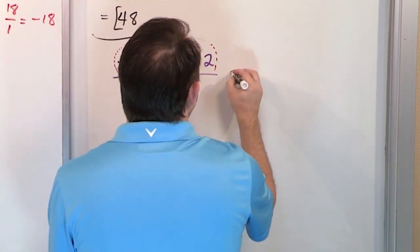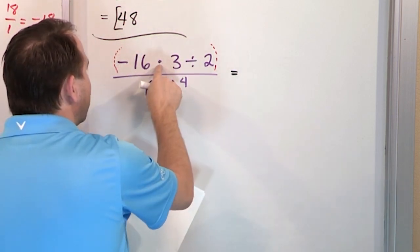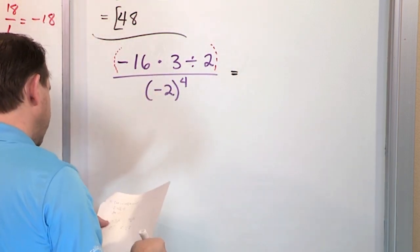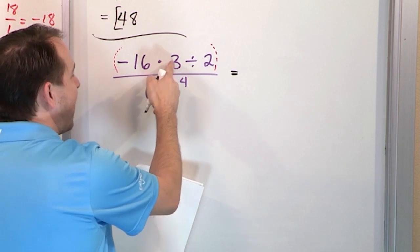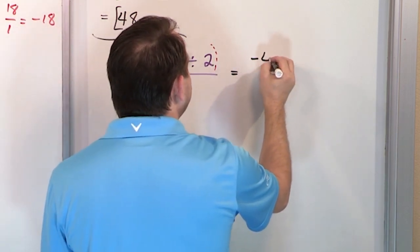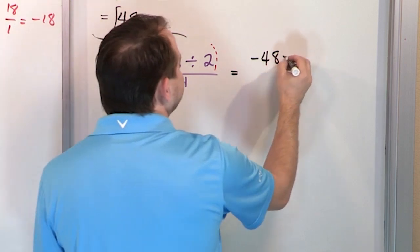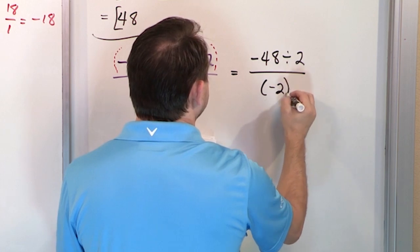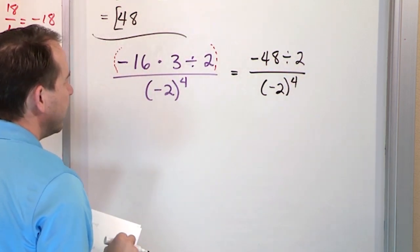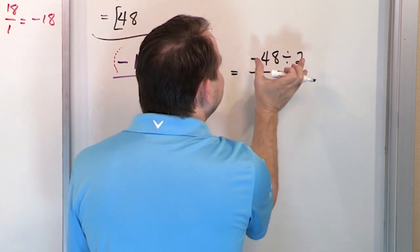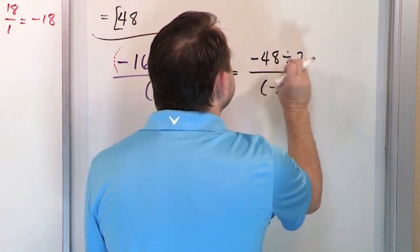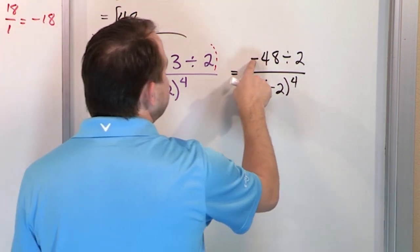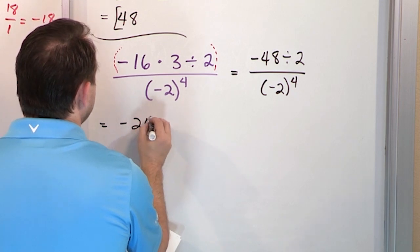Inside the numerator, what is negative 16 times 3? Negative times positive means you get negative 48, since 16 times 3 is 48. But we still have to divide by 2, and on the bottom we still have negative 2 to the fourth power. So next, we take negative 48 divided by 2. 48 divided by 2 is 24, and negative divided by positive means it's negative 24 on top.